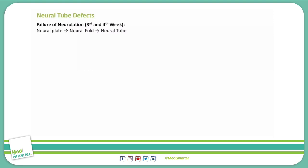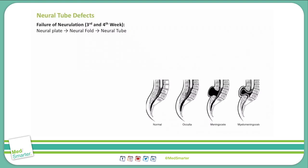There are five different varieties of neural tube defects that you need to know for Step 1. They range in severity from relatively benign to very serious, some requiring surgery and often resulting in lifelong disability.